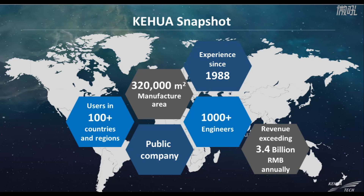Keihua was founded in 1988. In 2010, Keihua went public, enjoying new opportunities of development. The revenue has exceeded 3.4 billion RMB since 2018. In the last 32 years, Keihua has expanded production capacity, and the manufacturing area has reached 320,000 square meters.